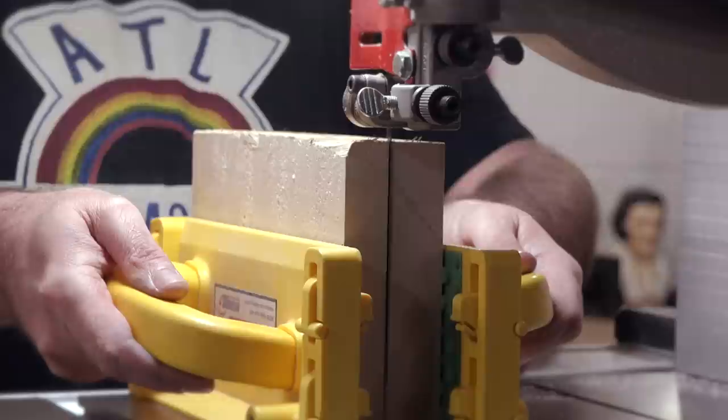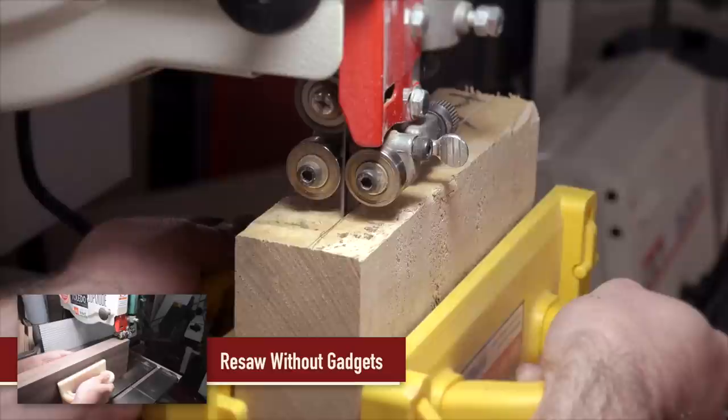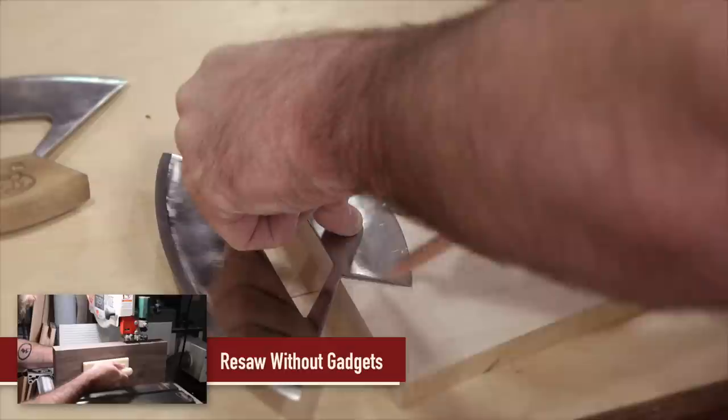Next I resaw some soft maple for the handle. If you want to see how I resaw check out my video Resawing Without Gadgets. I trace out my shape, cut it out on the bandsaw and resaw it in half for the two pieces that will make up the handle.